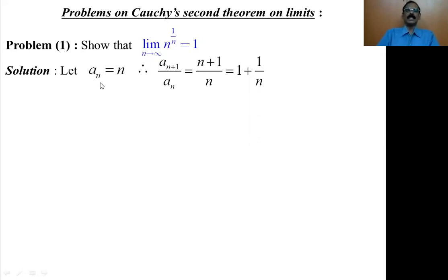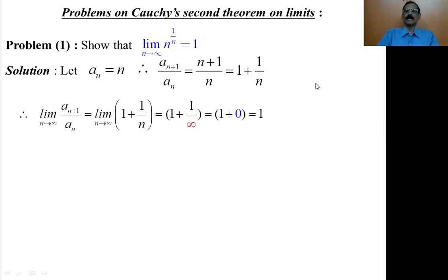Therefore, a_n is n. What is a_(n+1)? It is n+1. So a_(n+1) by a_n equals (n+1)/n, which equals 1 plus 1/n. Taking the limit on both sides, the limit of a_(n+1) by a_n as n tends to infinity is the limit of 1 plus 1/n as n tends to infinity.